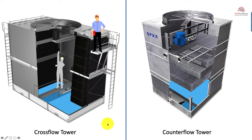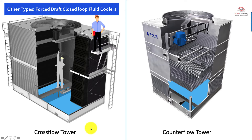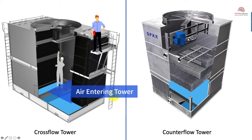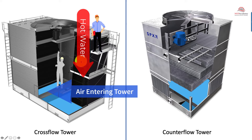There are two tower types: the cross flow and the counter flow tower. The difference is how the air enters the fill material. In the cross flow, the air entering the fill is horizontal while the water is trickling down vertically — air is horizontal — and that makes a cross, hence cross flow.